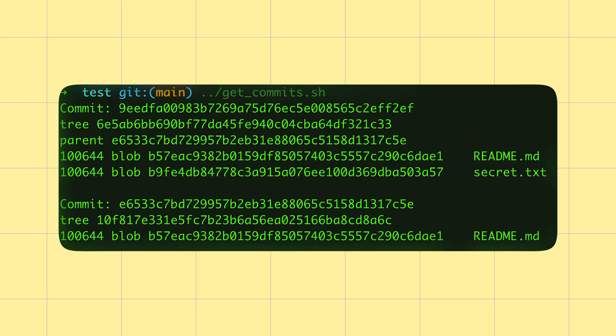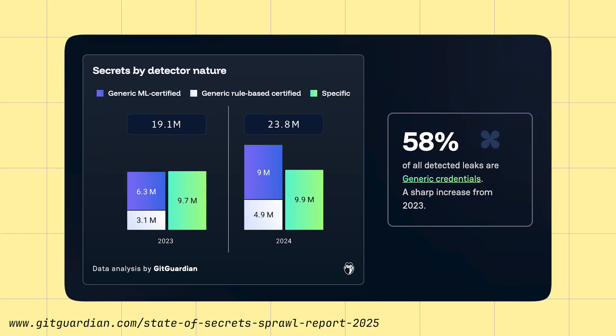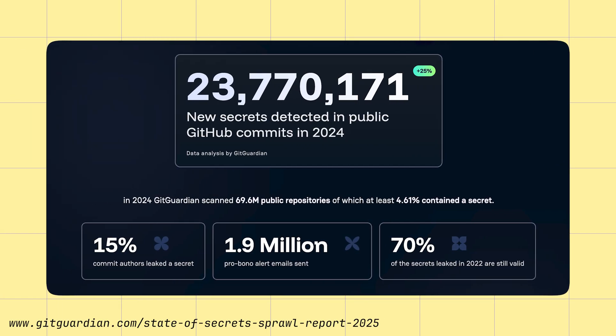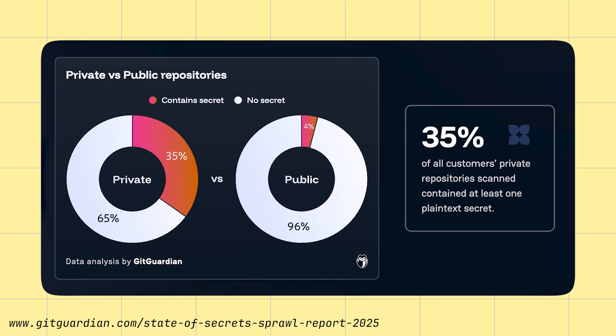If your source code leaks or an attacker gains access to it, they can steal your secrets and gain access to different systems. You may be wondering: surely no one actually hard-codes secrets like this? Well, it happens a lot. GitGuardian does research every year into the amount of secrets leaked publicly on GitHub. They found over 20 million secrets in the year 2024 on public GitHub repositories — that is crazy. About 4% of all public repositories leaked secrets, but if we look at private repositories, it's about 30% that actually contained leaked secrets. We can also look at real breaches: Twitch had all of their source code leaked, and inside that source code were over 6,000 secrets, including 194 AWS tokens and even some Stripe keys.